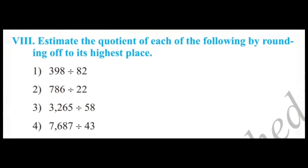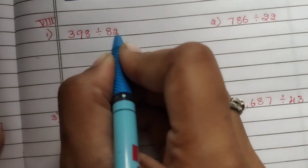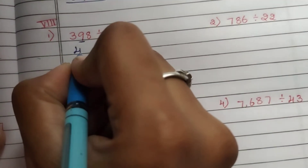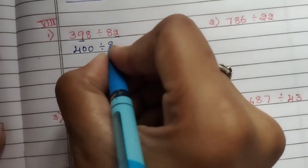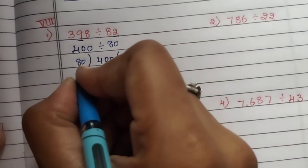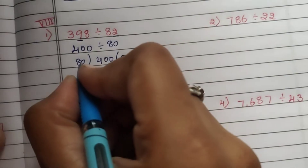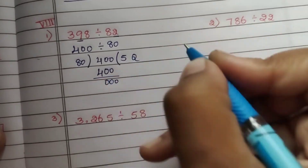Multiplication is done. Now for the 8th main: estimate the quotient of each of the following by rounding off to its highest place. Division problems now. 8th main, first question: 398 divided by 82. Digit 9 rounds 398 up to 400. Digit 2 rounds 82 down to 80. Divide 400 by 80: 8 fives are 40, so the quotient is 5.